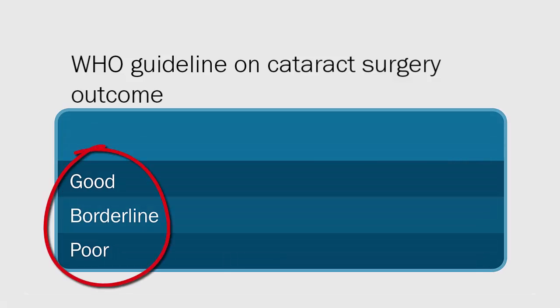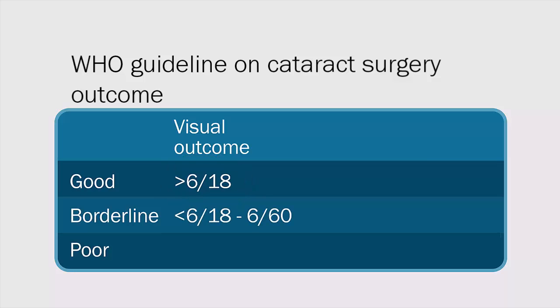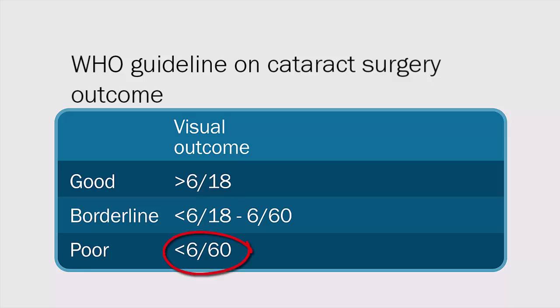The World Health Organization has produced a guideline for the visual outcomes that should be expected from cataract surgery. Outcomes are classified as good, borderline, or poor. An outcome is good if visual acuity after surgery is equal to or better than 6/18 in the operated eye. An outcome is borderline if acuity is worse than 6/18 but equal to or better than 6/60. Any acuity less than 6/60 is classified as a poor outcome.